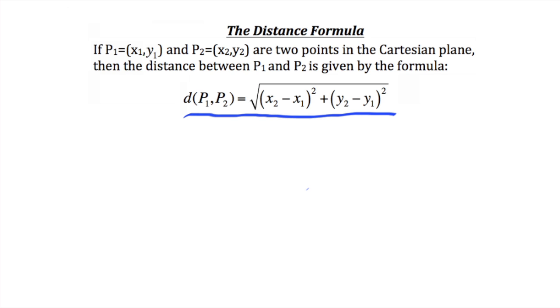Simply put, to compute the distance between two points, you find the distance of the x-coordinates, square it, and add this to the square of the difference of the y-coordinates. The square root of this sum is the distance.